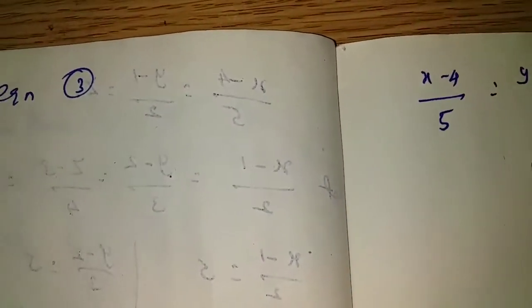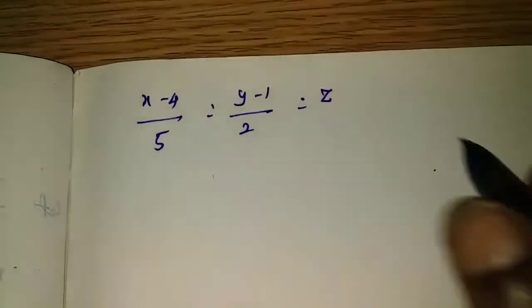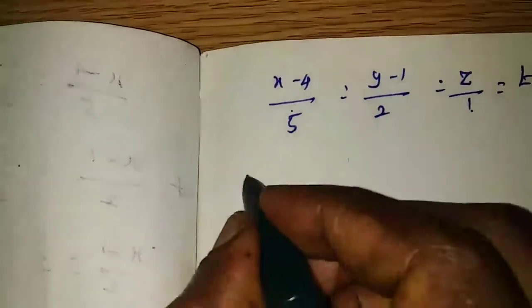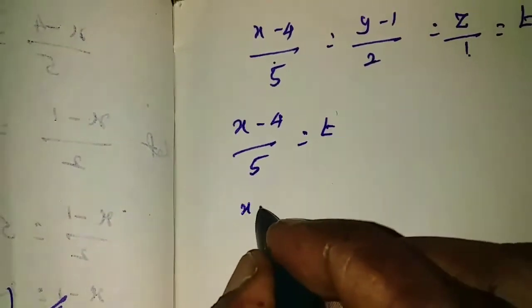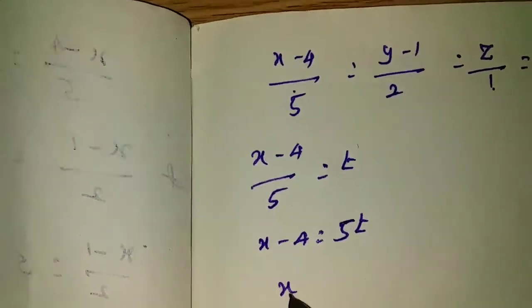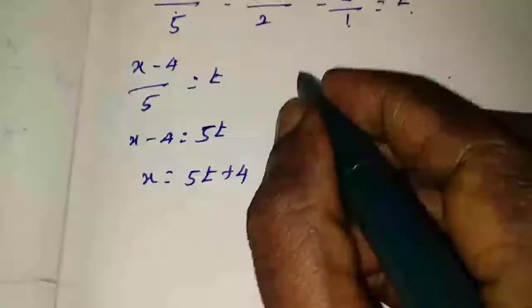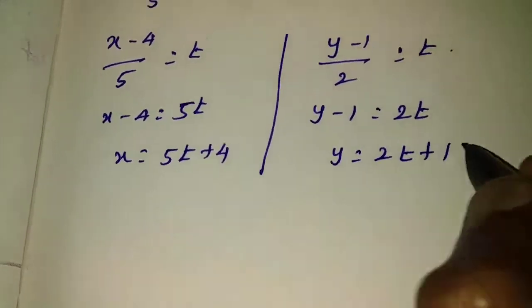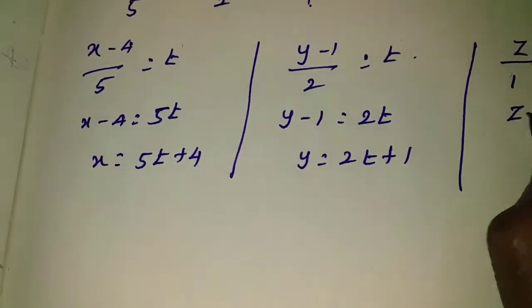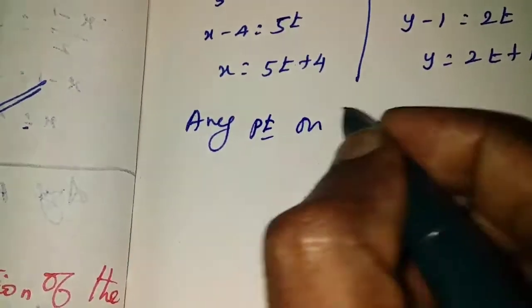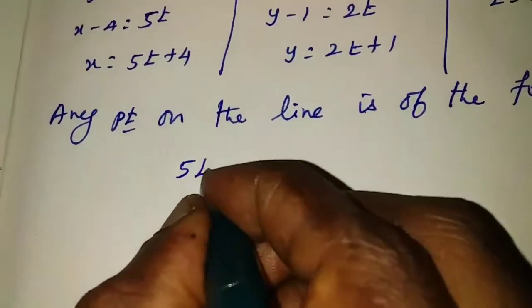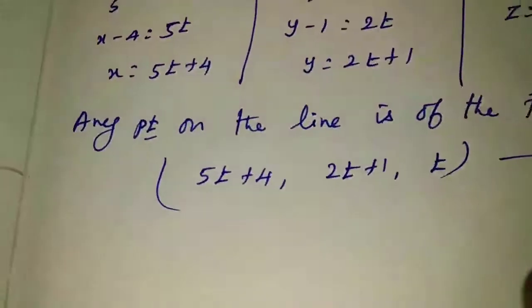Write the next equation. Let (x minus 4)/5 = (y minus 1)/2 = z/1 equal to t. Since the denominator of z has no written value, write it as 1 equal to t. Comparing x, y, z with t: x minus 4 by 5 equals t, so x equals 5t plus 4. y minus 1 by 2 equals t, so y equals 2t plus 1. z by 1 equals t, so z equals t. Any point on the second line is of the form (5t+4, 2t+1, t). This is equation 2.